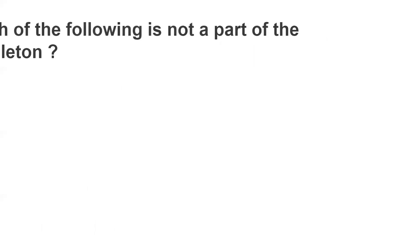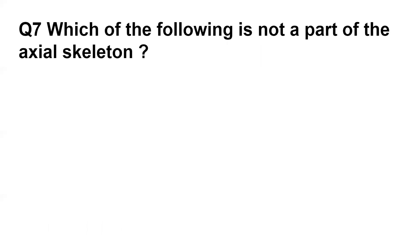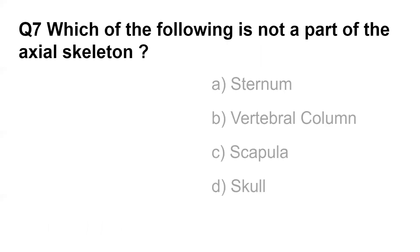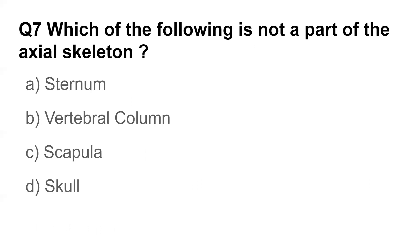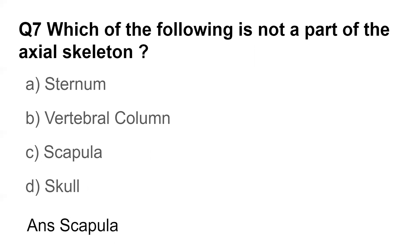Question number seven: Which of the following is not a part of the axial skeleton? Options are sternum, vertebral column, scapula, and skull. The answer is scapula.